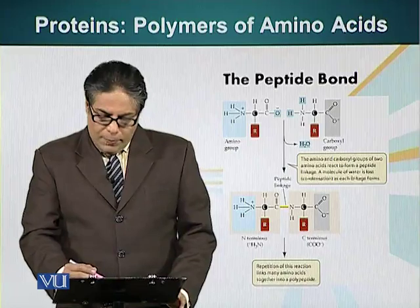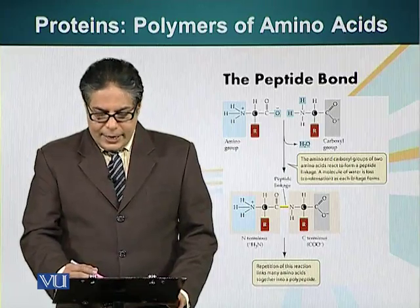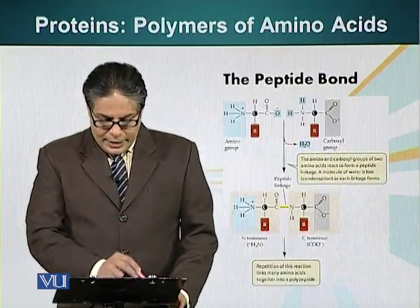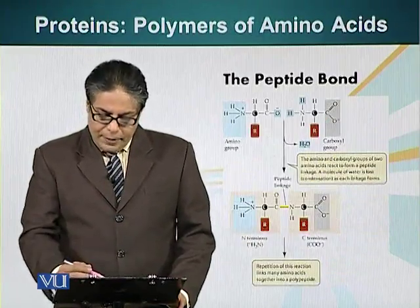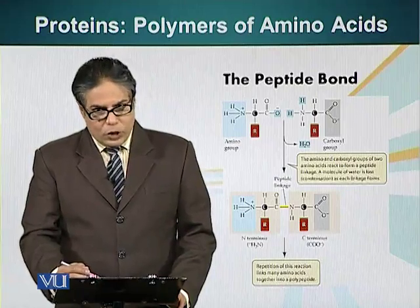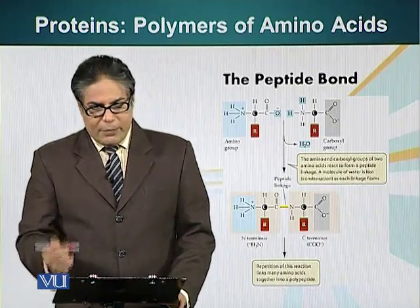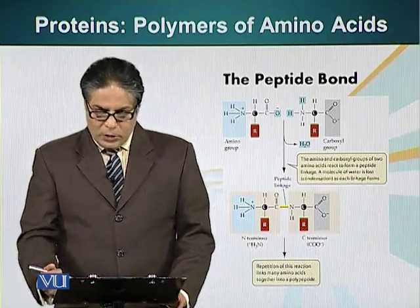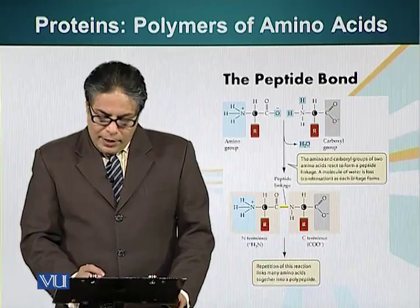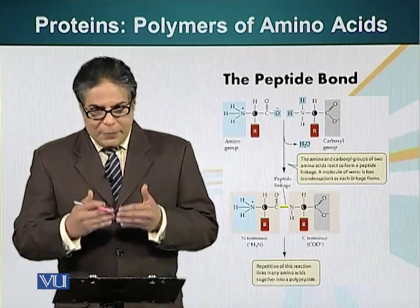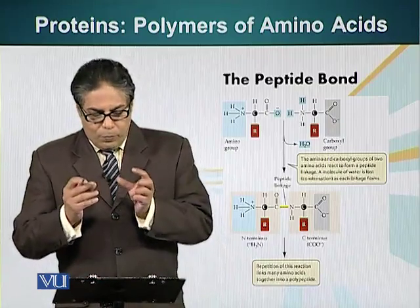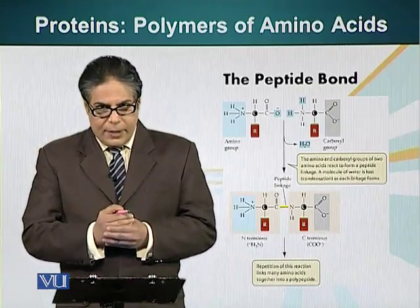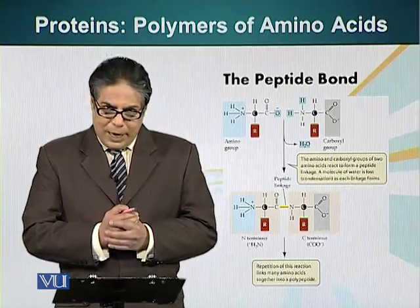The carboxyl group of one amino acid forms a bond — the carbon present in the carboxyl group forms a bond with the nitrogen atom of an adjacent amino acid. When this bond forms, a water molecule is lost. So, the carbon-nitrogen bond is basically the bond holding two monomers of a protein together. This bond is called the peptide bond.